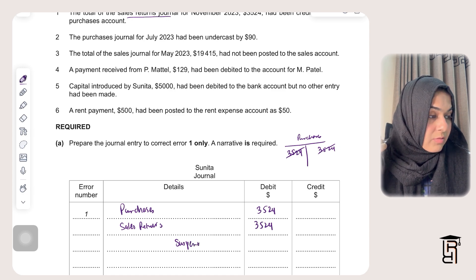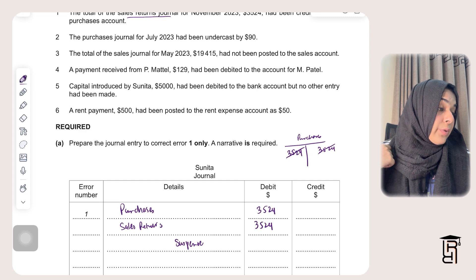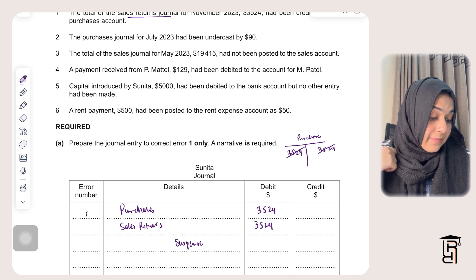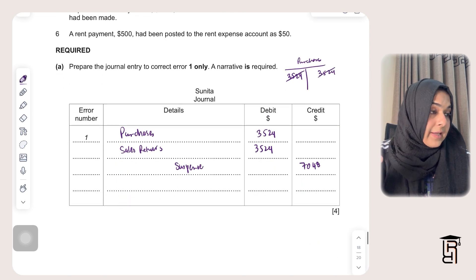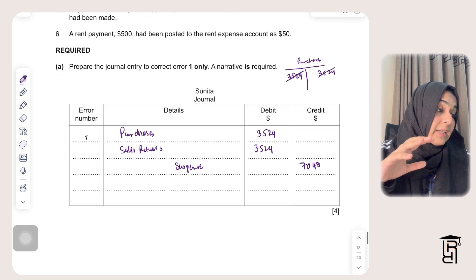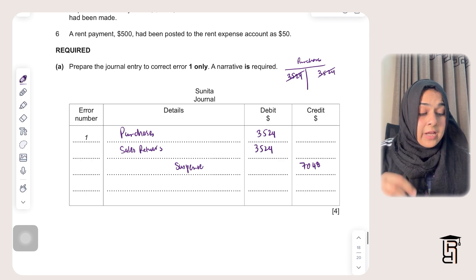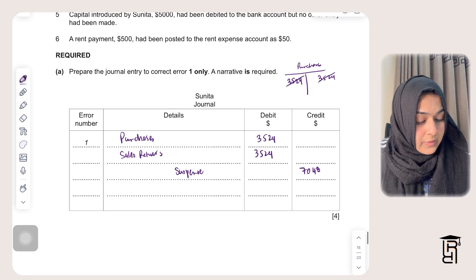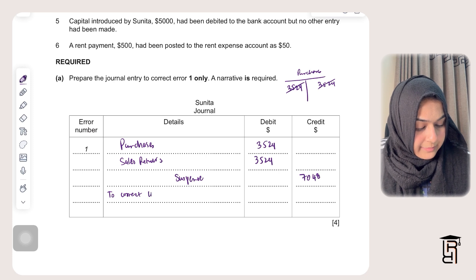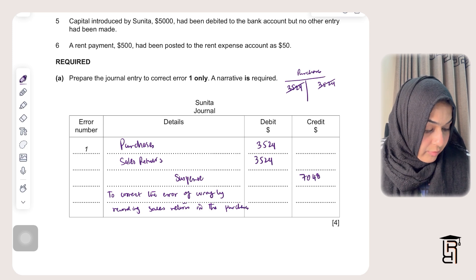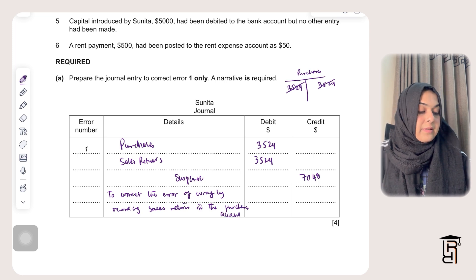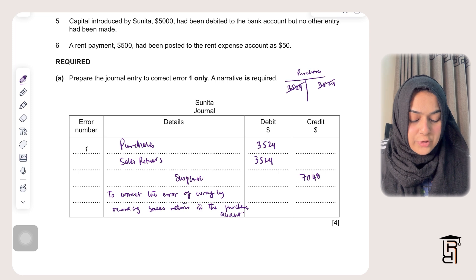Suspense is credited 3524 plus 3524, which equals 7048. The narration for the journal entry reads: 'To correct the error of wrongly recording sales returns in the purchases account.'